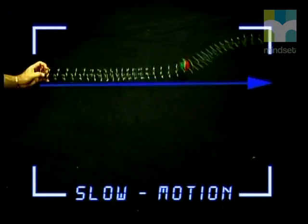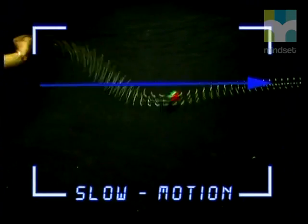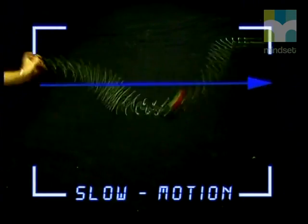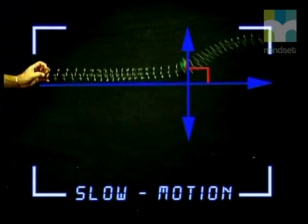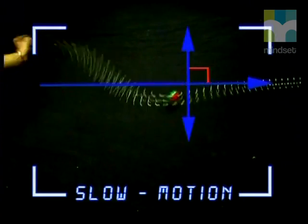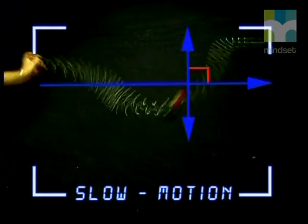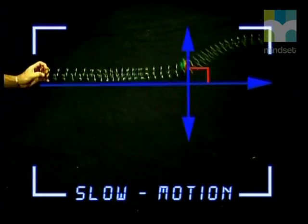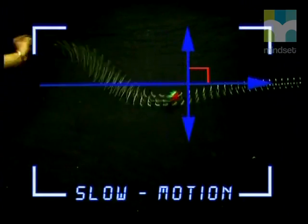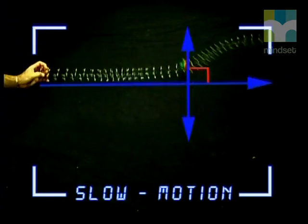For example, in the pulses we have looked at in the slinky spring, the movement of the particles of the medium are perpendicular — that is, at right angles to the movement of the pulse.